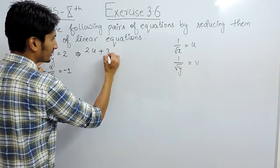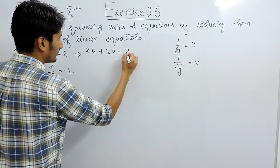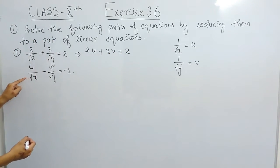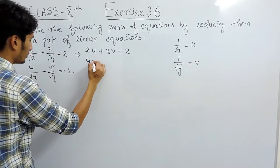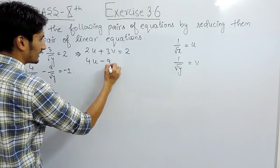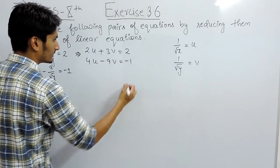Similarly this will be 3v and this will be equals to 2, and this equation will become 4u minus 9v equals to minus 1.